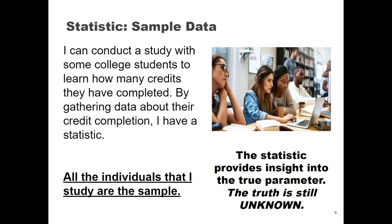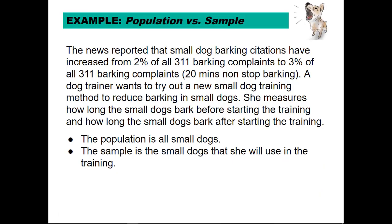Let's look at another example to identify the population and the sample. The news reported that small dog barking citations have increased from 2% to 3% of all 311 barking complaints. You can get a citation if a dog barks for 20 minutes non-stop. A dog trainer wants to try out a new small dog training method to reduce barking in small dogs. She measures how long the small dogs bark before starting the training and how long after. So the population is going to be all small dogs, and she's going to take a sample of small dogs to use in the training.